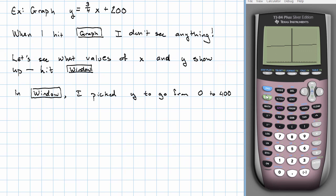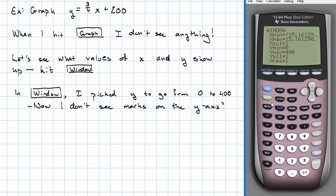And there are a couple of things going on. One of the weirdest things is, why don't I see marks on the y-axis? I'll tell you why. This number y scale sets how far apart the marks are going to be. If they're only one apart, well, then your calculator screen is trying to fit 400 little marks onto it. That's no good. Let's try maybe a mark every 50.